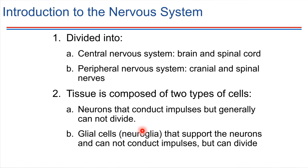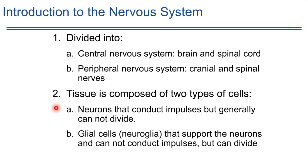Neuroglia are not capable of sending signals, but they are capable of dividing, and they're very important for maintaining the environment around neurons. We're going to look at each of these cell types in order — let's start with neurons.